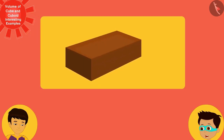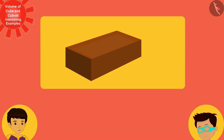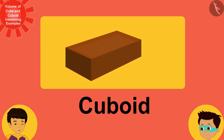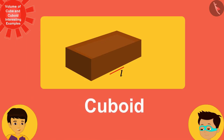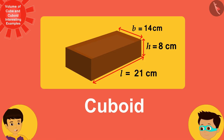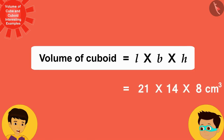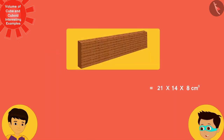Now, can you write the volume of each brick in the same way? Absolutely. Each brick is cuboid in shape, having 21 centimeters, 14 centimeters and 8 centimeters as the length, breadth and height respectively. Now, I will write the length, breadth and height of the brick in the formula in this way instead of L, B and H to find the volume of the cuboid brick.